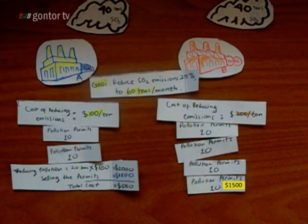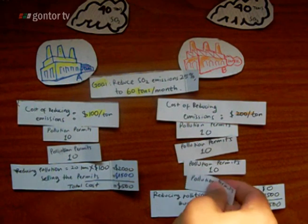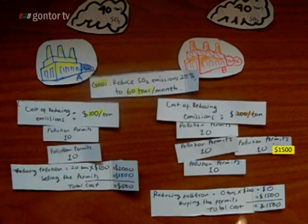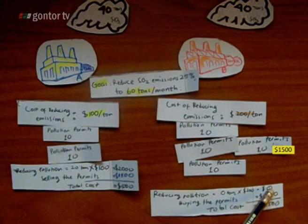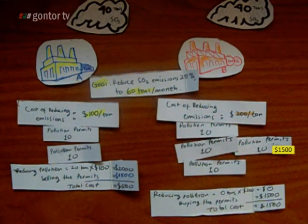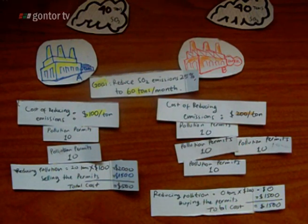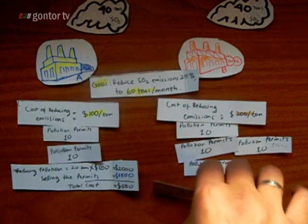Now what happened with company B? Company B reduces pollution zero tons, so it costs zero dollars, because they have 40 pollution permits — meaning they can emit up to 40 tons. However, they also bought the permits for $1,500, so their total cost is $1,500.